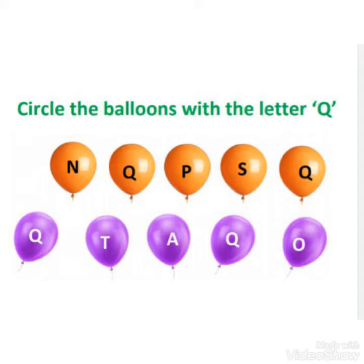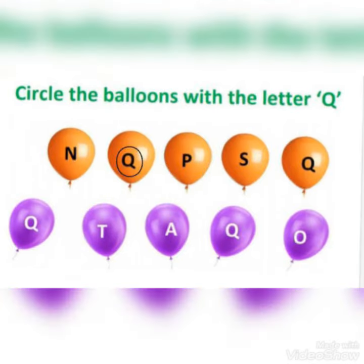Q letter — we will circle the balloon. You have to put a circle on the second balloon, Q letter. The third balloon is P, so no need. The fourth balloon is S, so no need.